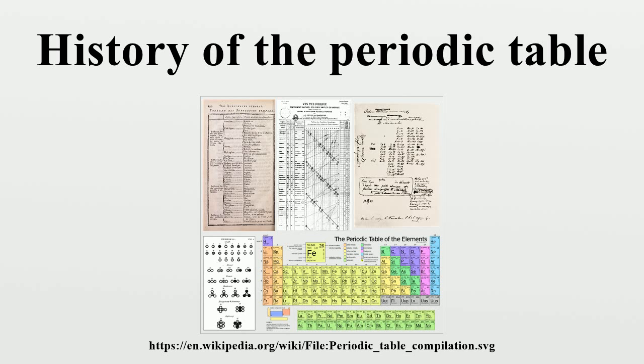19th century. Johann Wolfgang Döbereiner. In 1817, Johann Wolfgang Döbereiner began to formulate one of the earliest attempts to classify the elements. In 1829, he found that he could form some of the elements into groups of three, with the members of each group having related properties. He termed these groups triads.